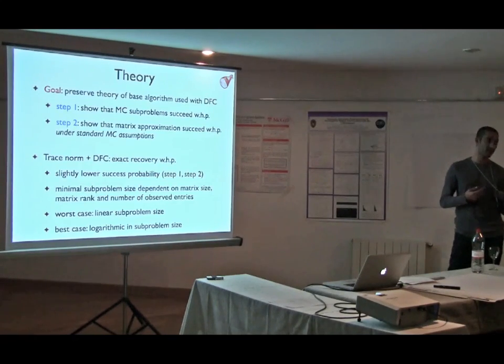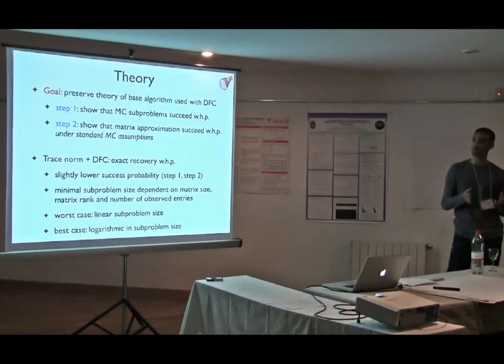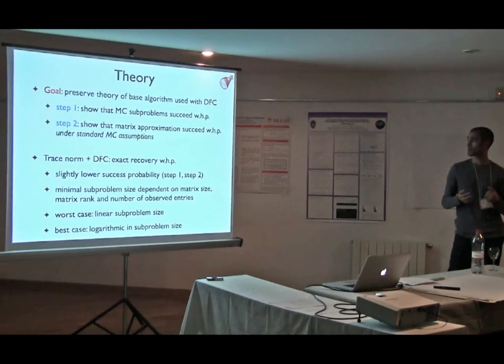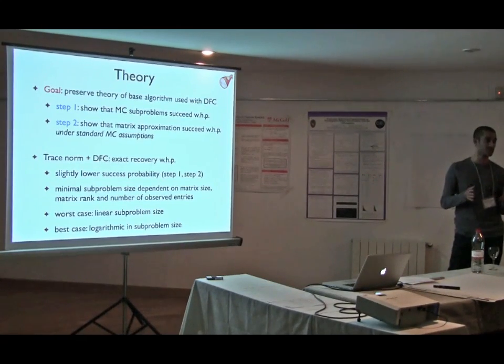The first involved showing that performing matrix completion at each of these subproblems would succeed with high probability, and that involved basically proving that the subsamples that we had had the same property or follow the same assumptions that were made in the original problem. And then second,